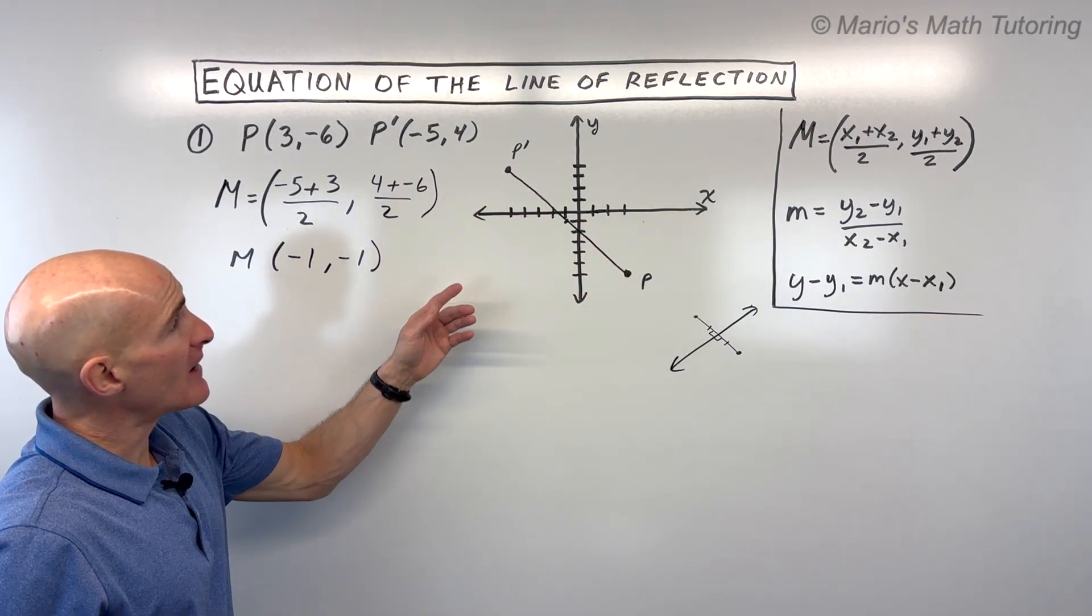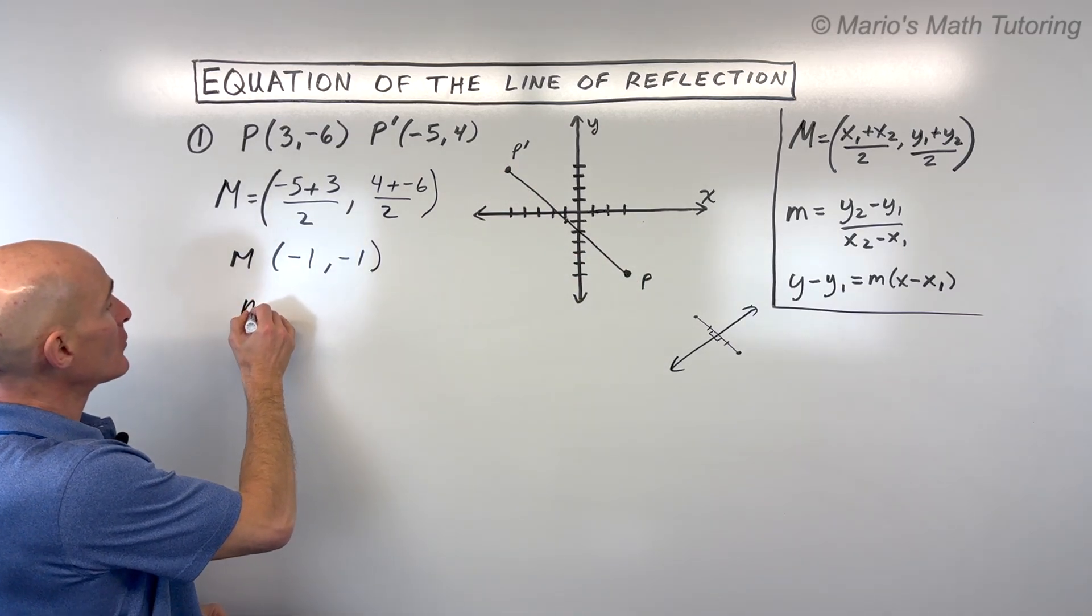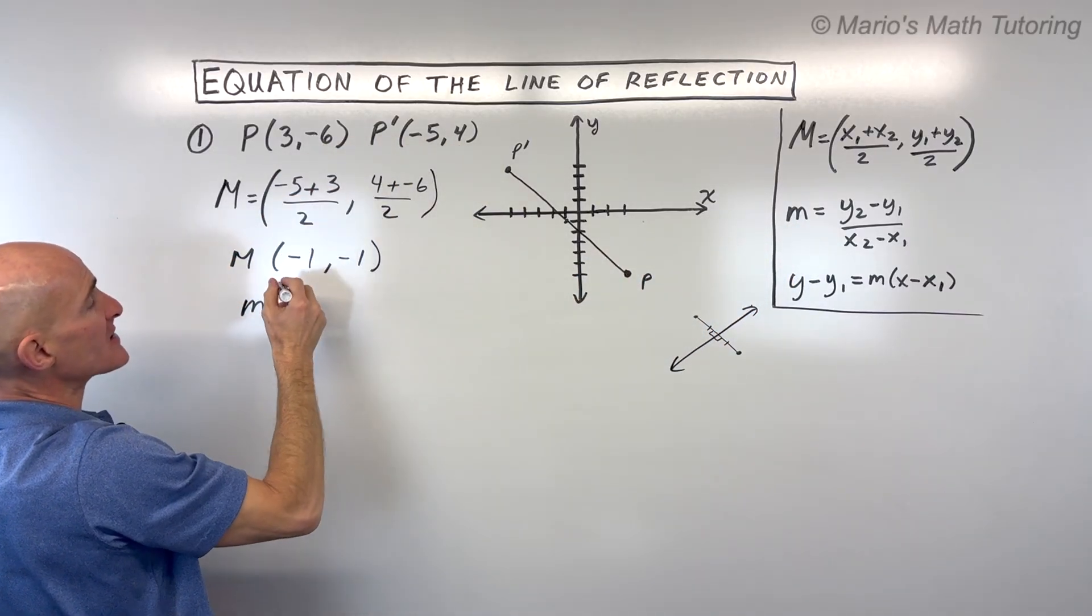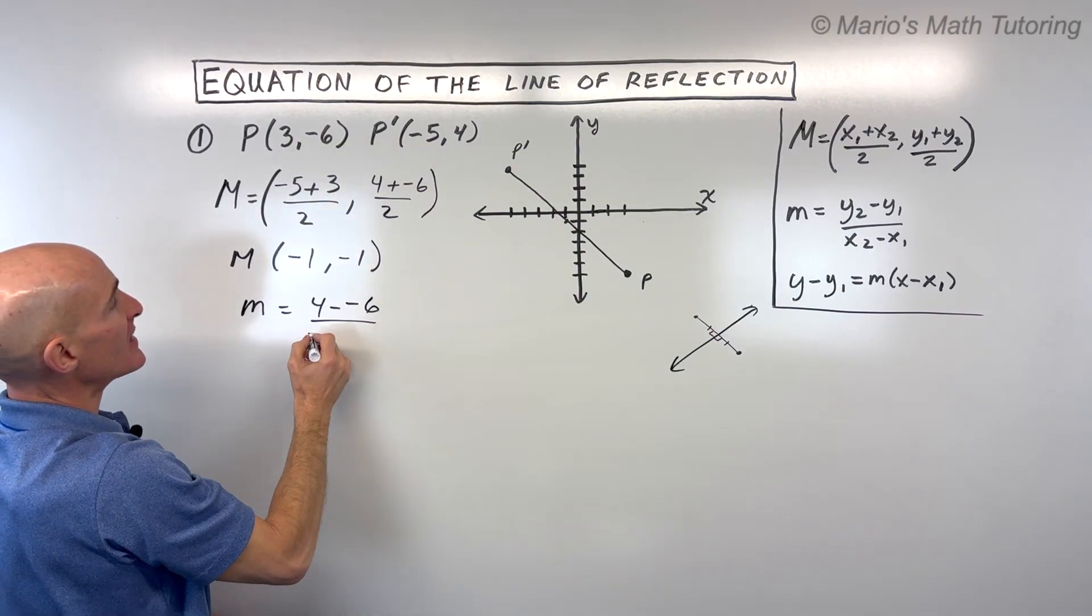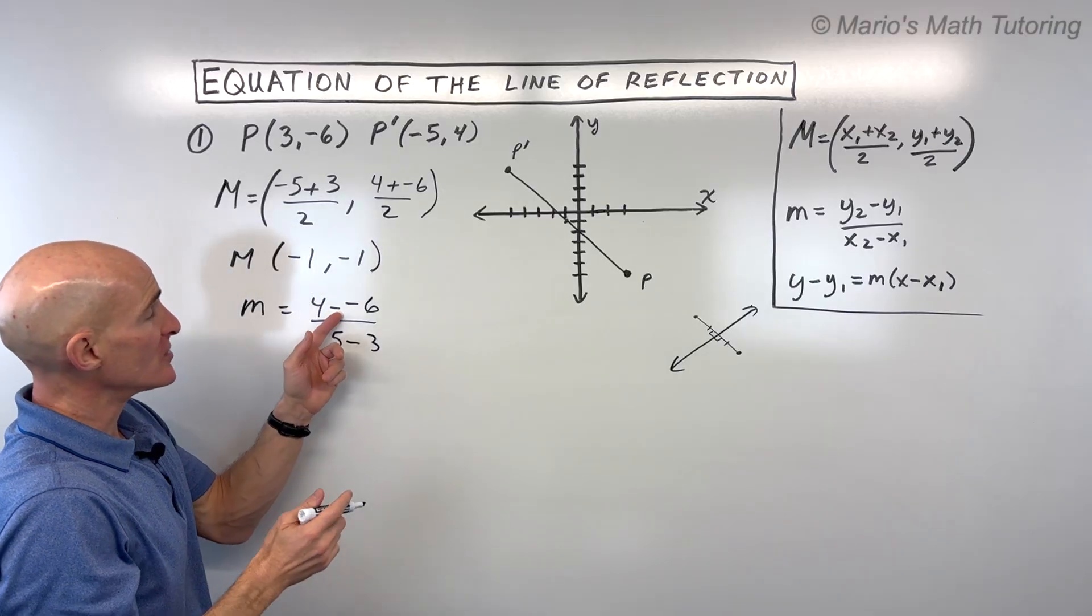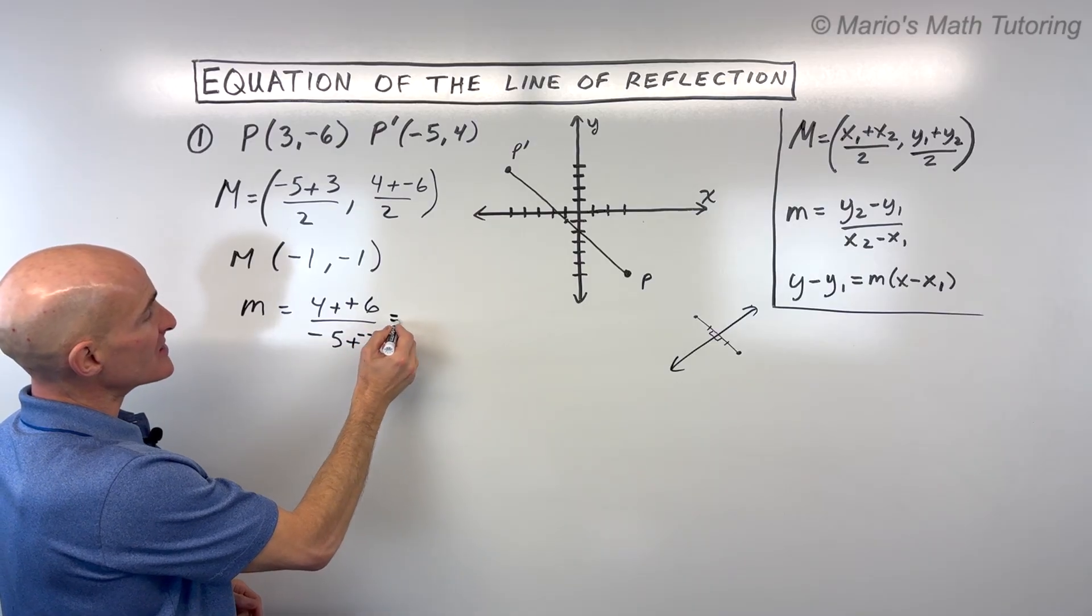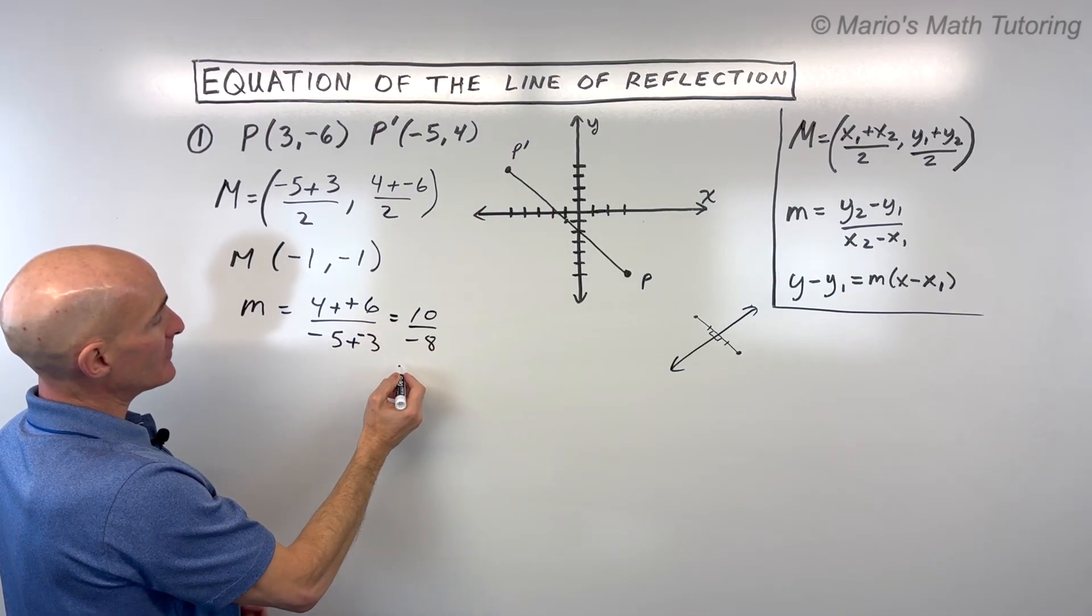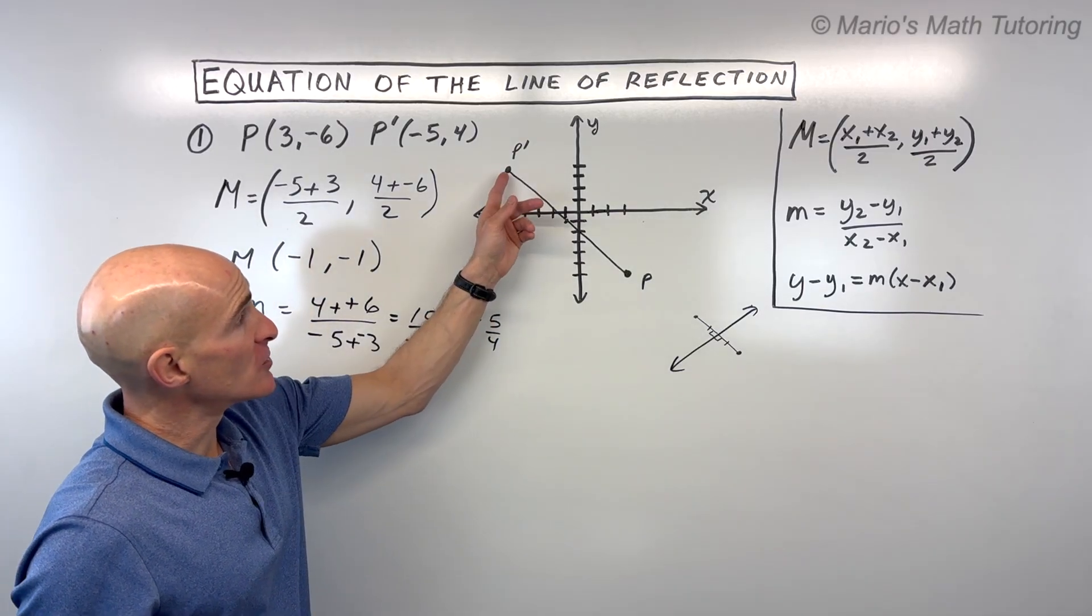But now what we want to do is we want to find the slope of this line. And so to find the slope, we're going to use our slope formula, which is the difference in the y coordinates. So 4 minus negative 6 divided by the difference in the x coordinates. That's negative 5 minus 3. Now be careful with the signs here. When you subtract, that's like adding the opposite. And so now you can see this is going to be 10 over negative 8, which is equal to negative 5 fourths if we reduce. Now that's the slope of this line.